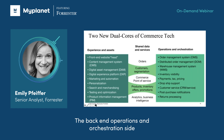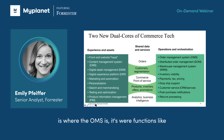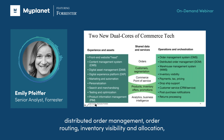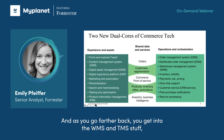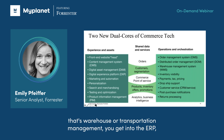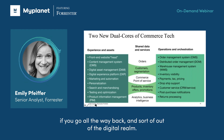The backend operations and orchestration side is where the OMS is. It's where functions like distributed order management, order routing, inventory visibility and allocation, all of these things happen. And as you go farther back, you get into the WMS and TMS stuff — that's warehouse or transportation management. You get into the ERP if you go all the way back and sort of out of the digital realm.